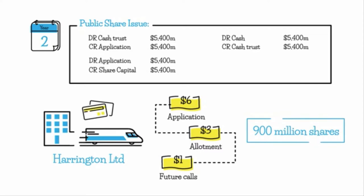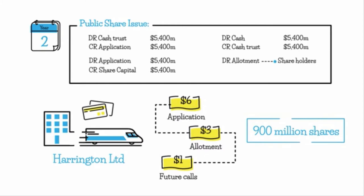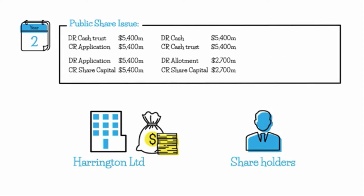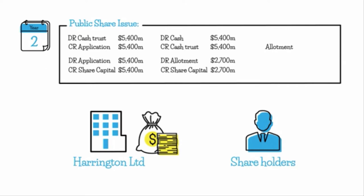We then recognize the amount due on allotment — $3 was due on allotment. We debit the allotment account, which is a contra equity account and debit-natured, representing an obligation by our shareholders to pay us. That's $3 times 900 million shares, so $2,700 million. We credit share capital $2,700 million to recognize the increase in equity. The final journal entry records the actual receipt of allotment monies — all allotment money was received — so we debit cash $2,700 million and credit allotment $2,700 million.